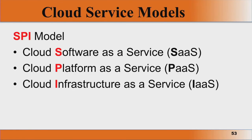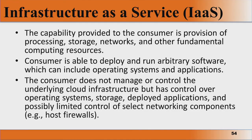Now we will look at cloud service models. There are three service models: software as a service, platform as a service, and cloud infrastructure as a service. We will talk about this SPI model in some detail. Infrastructure as a service essentially means providing processing capabilities like CPUs, storage, networks, and other fundamental computing resources. The consumer can run arbitrary software including their own operating system and applications. The consumer will not manage or control the underlying infrastructure — that will be completely controlled by the cloud service provider — but the consumer will have control over the operating systems, storage, and deployed applications.